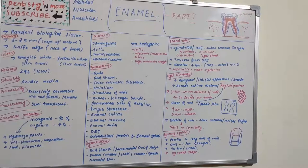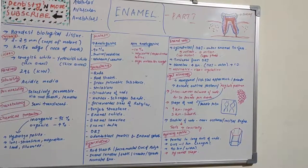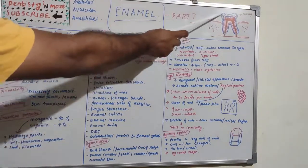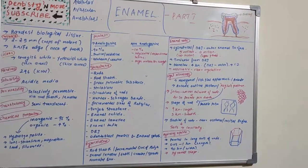Enamel is an epithelially derived protective covering of variable thickness over the entire surface of the crown. Hope you remember the stages of tooth development: the bud stage, cap stage, and bell stage. The ameloblast and its conversion to enamel are all interconnected with these stages.